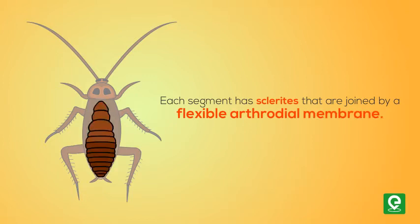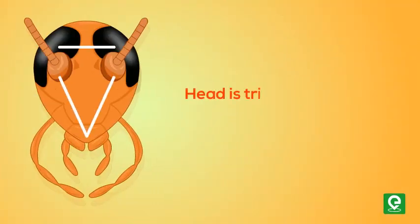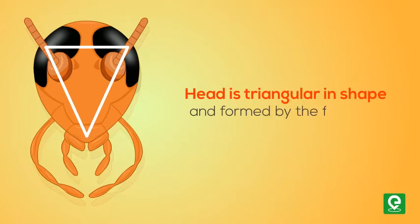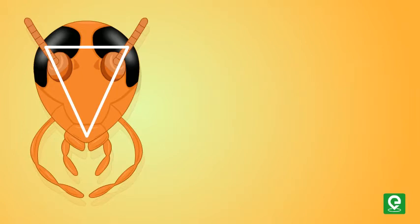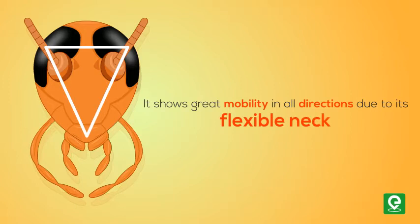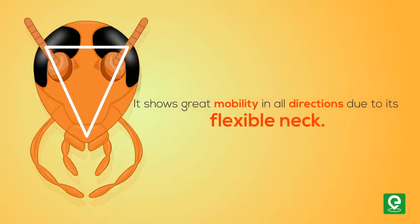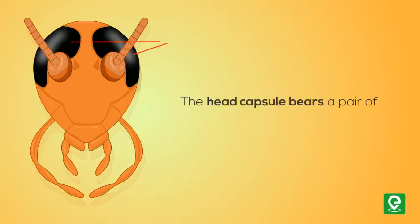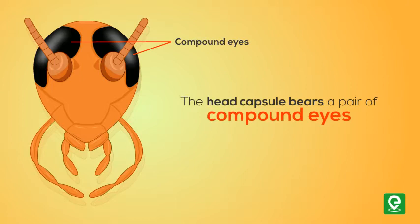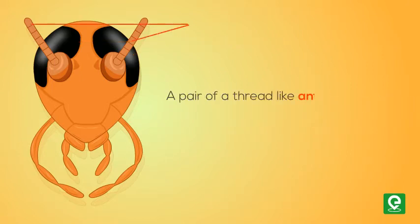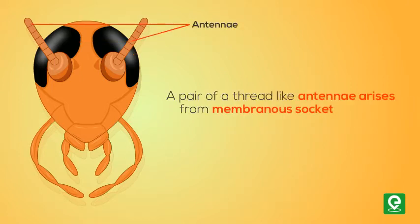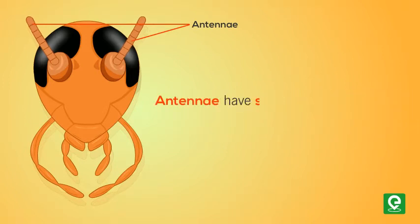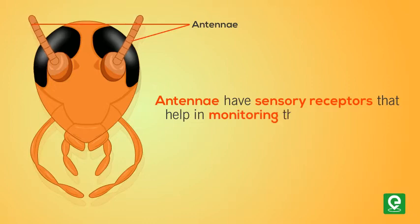The head is triangular in shape and formed by the fusion of six segments. It shows great mobility in all directions due to its flexible neck. The head capsule bears a pair of compound eyes. A pair of thread-like antennae arise from membranous sockets lying in front of the eyes. Antennae have sensory receptors that help in monitoring the environment.